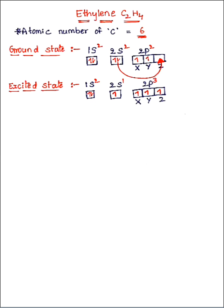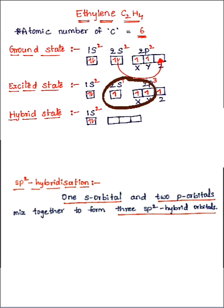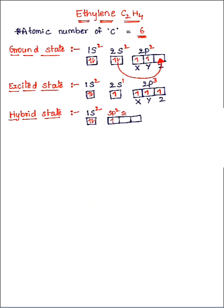In the excited state, 1s still has two electrons. In sp2 hybridization, the 2s orbital and the 2px and 2py orbitals combine together to form three sp2 hybrid orbitals. The unpaired electrons are placed in these three hybrid orbitals — the first, second, and third sp2 orbitals. The 2pz orbital remains as an unhybridized orbital; it does not combine with 2s, 2px, or 2py, and it has more energy than all three hybrid orbitals.